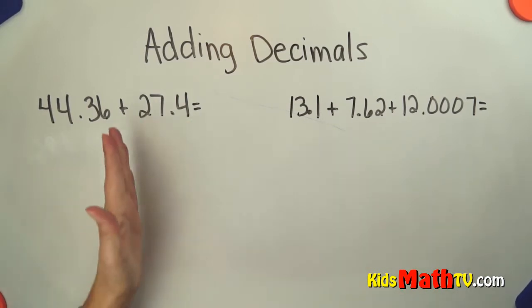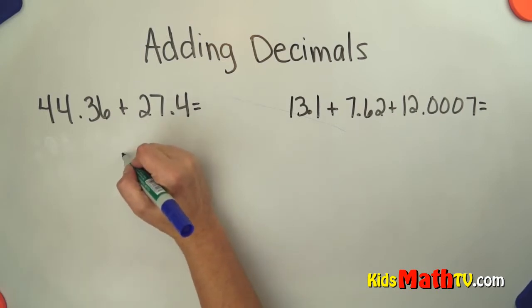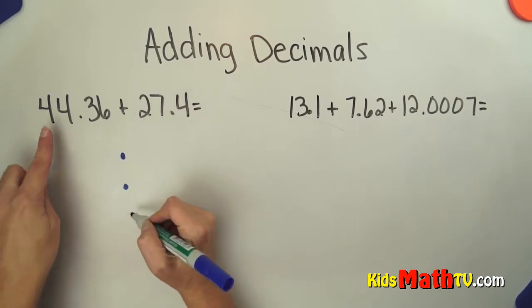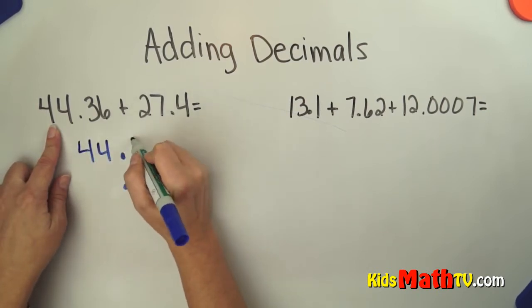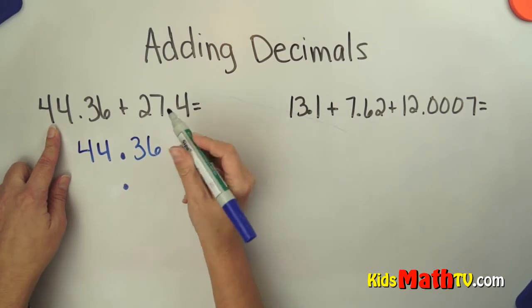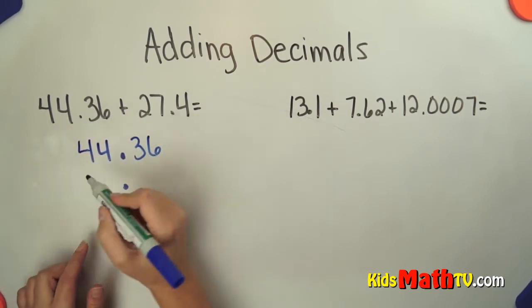When you add decimals you need to remember that you have to line up your decimal points. So we take our first number, 44 and 36 hundredths, and we are going to add it to 27 and 4 tenths.